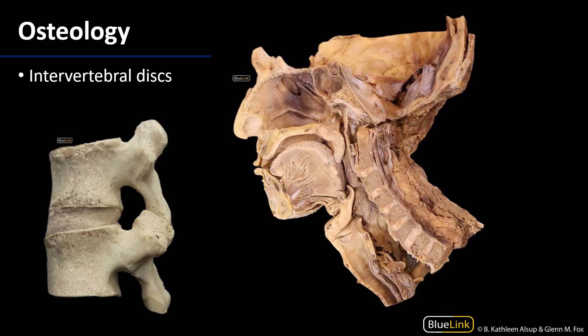Looking at the c-spine in a sagittal section, the skull sits atop the c-spine with an articulation there. In between the bodies of the vertebrae are intervertebral discs — fibrocartilaginous discs that allow for cushioning and free articulation of the vertebrae, enabling lateral flexion, anterior flexion, and extension of the c-spine. These intervertebral discs continue all the way down to the lumbar region, even found between the fifth lumbar vertebra and the sacrum.